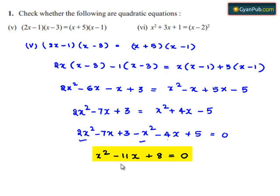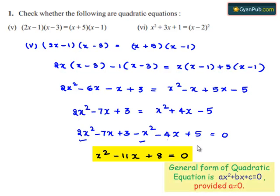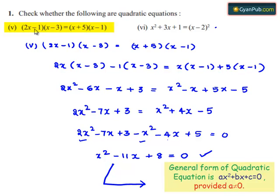The equation obtained is x² - 11x + 8 = 0. We know that the general form of a quadratic equation is ax² + bx + c = 0. Since the obtained equation x² - 11x + 8 = 0 resembles this general form, we can conclude that the given equation (2x - 1)(x - 3) = (x + 5)(x - 1) is a quadratic equation.